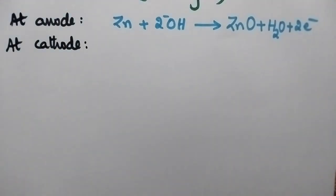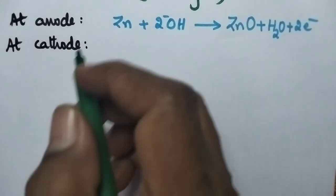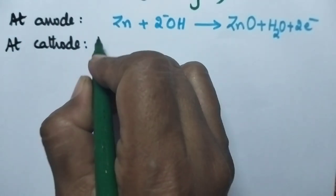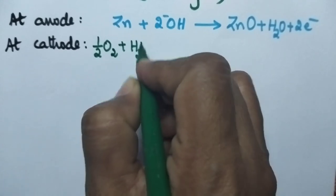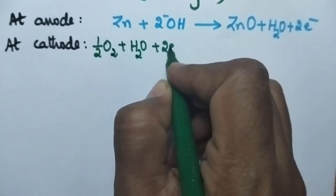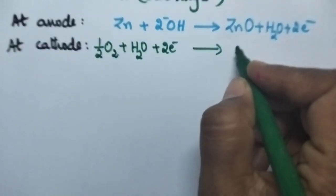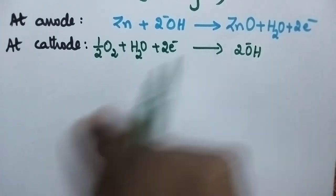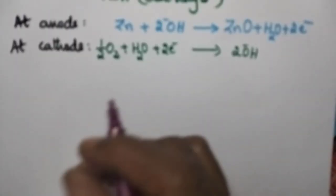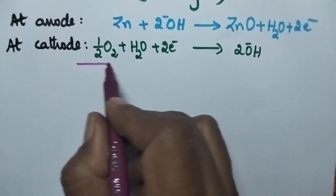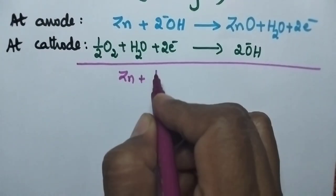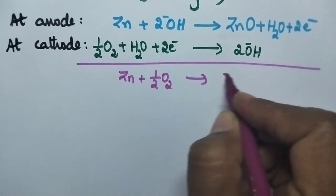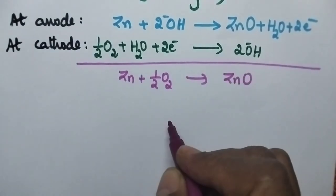Coming to the reaction at the cathode. At the cathode oxygen gas is absorbed and that results in the formation of 2 OH minus ions. The net reaction is Zn reacts with oxygen and results in the formation of zinc oxide.